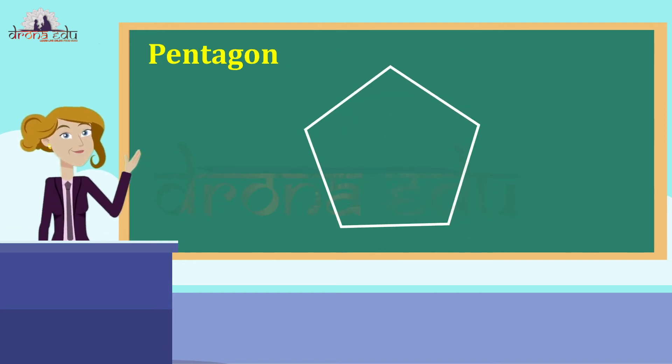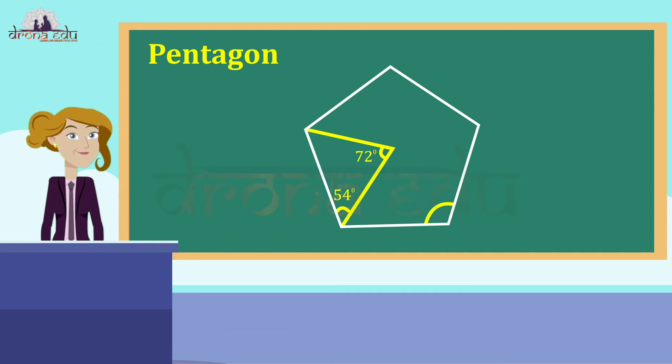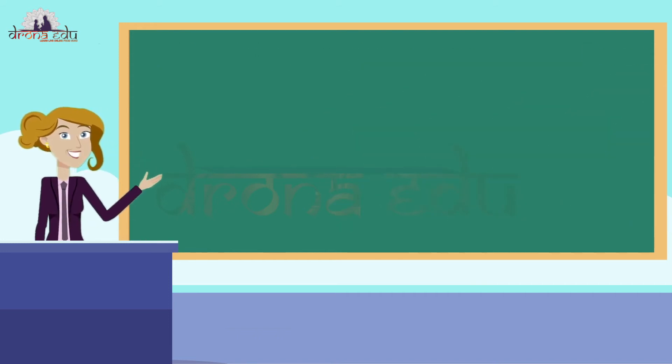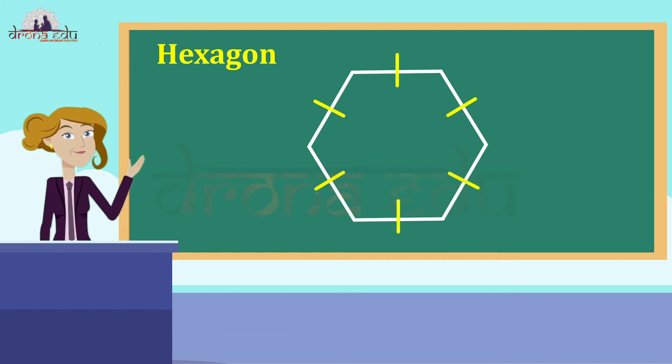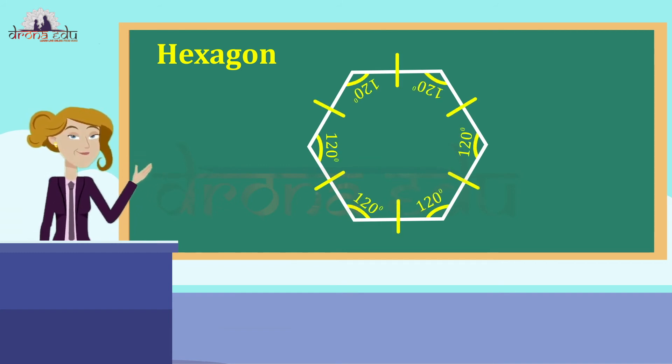If a pentagon is regular, naturally its sides should have equal length. You will later on learn that the measure of each of its angles is 108 degrees. A regular hexagon has all its sides equal and each of its angles measures 120 degrees.